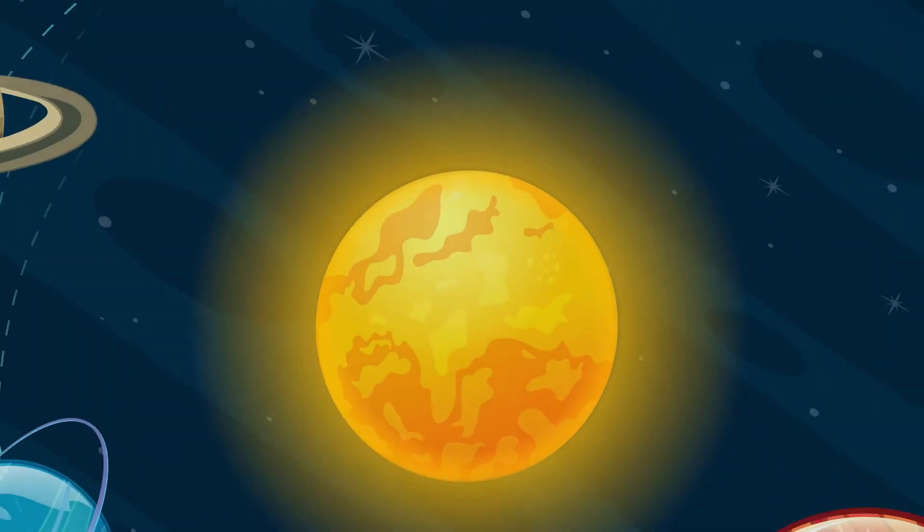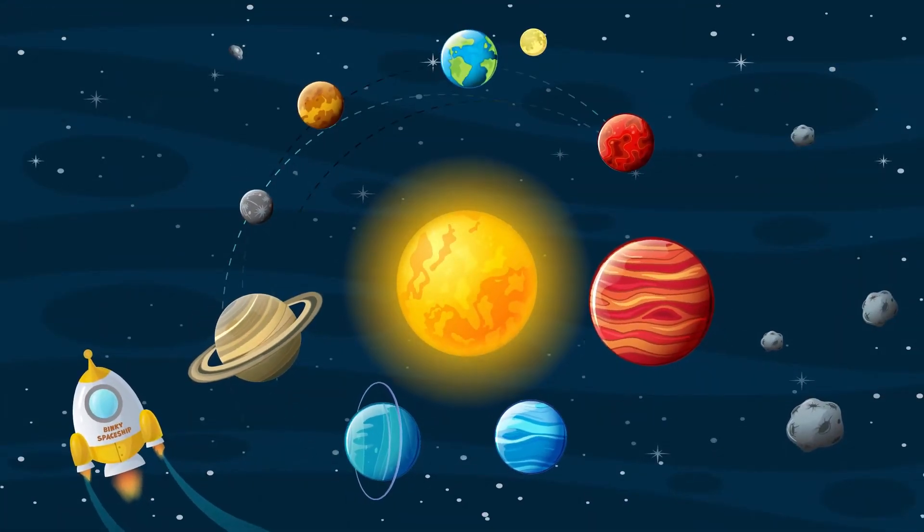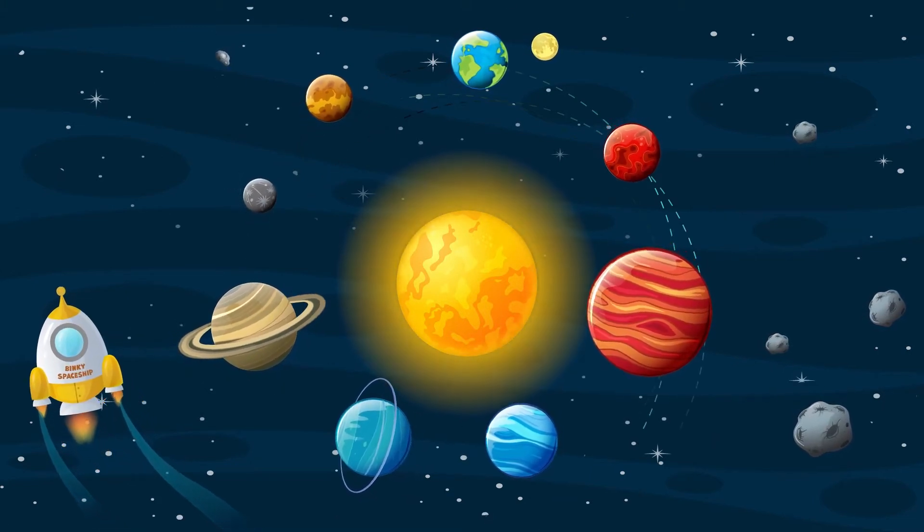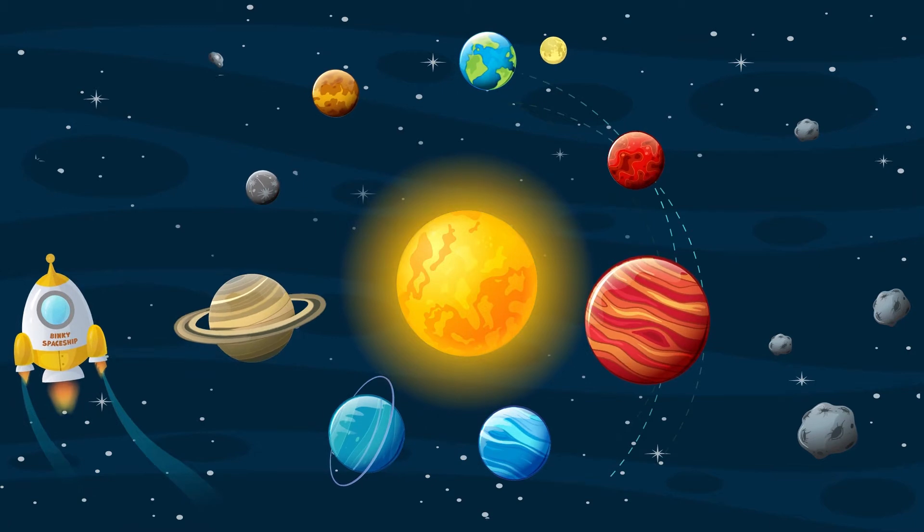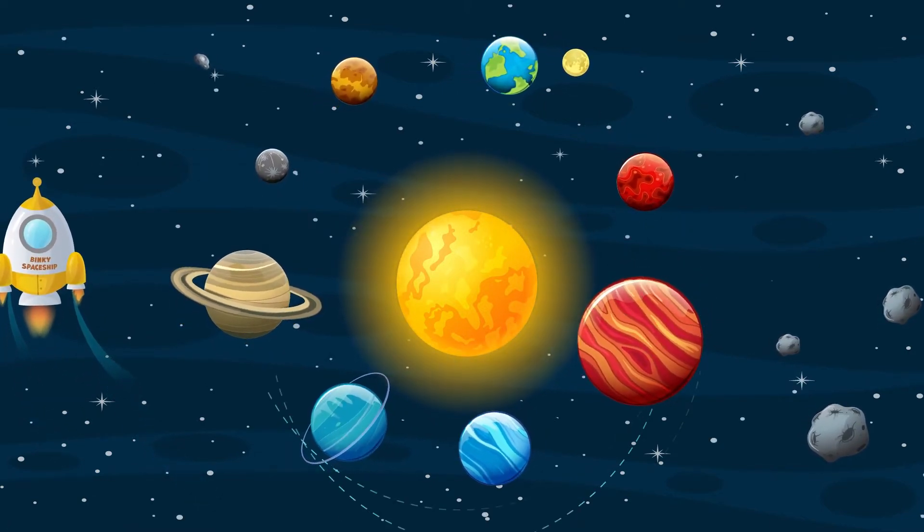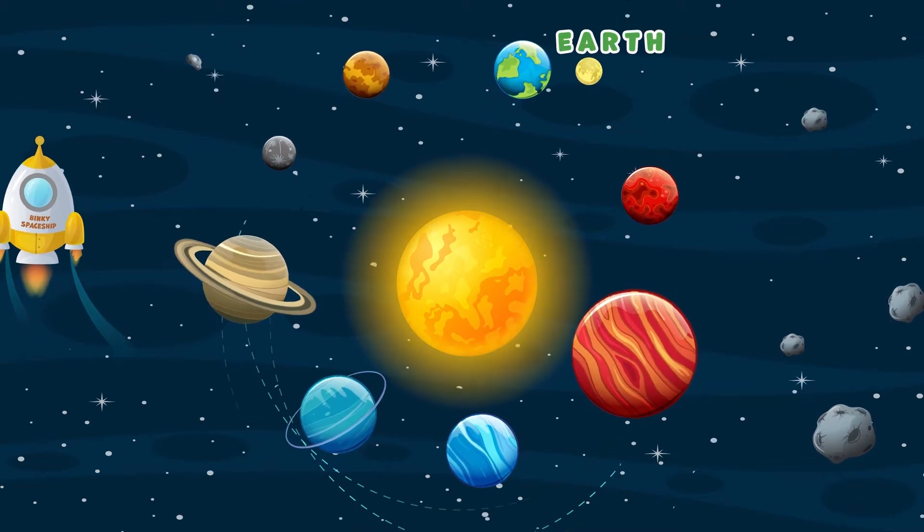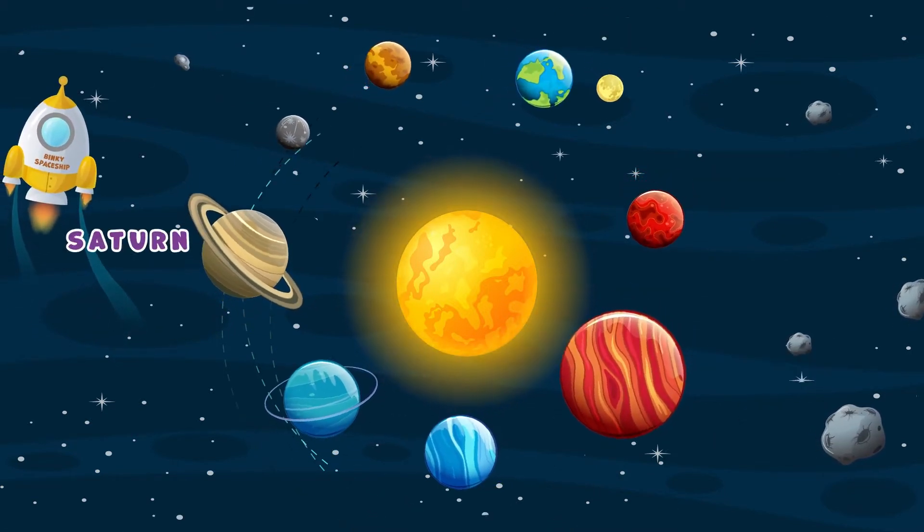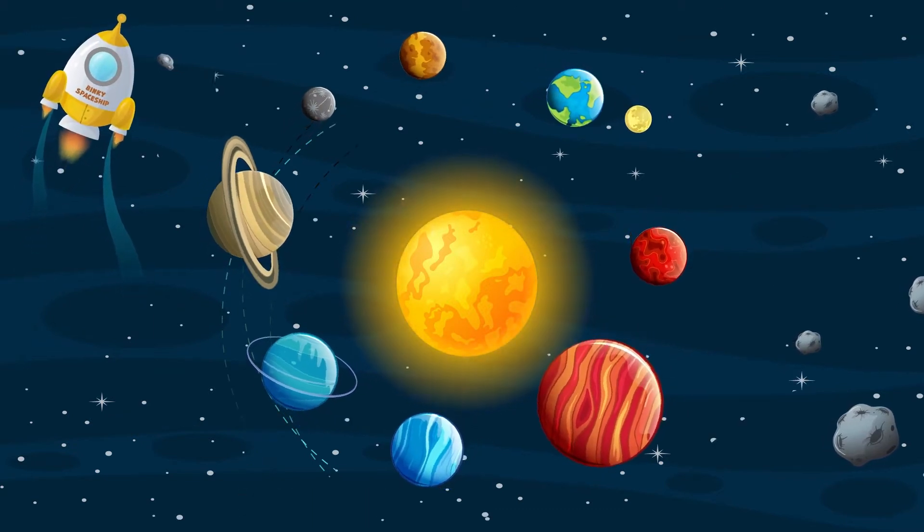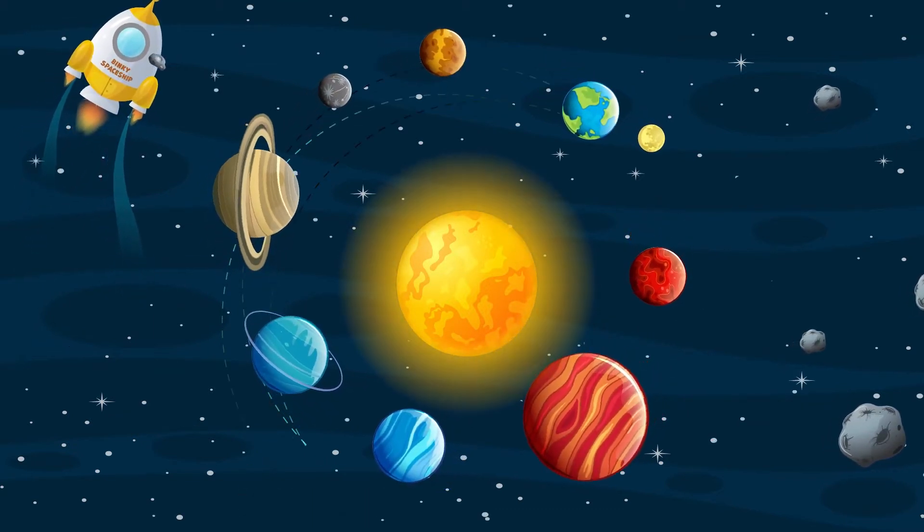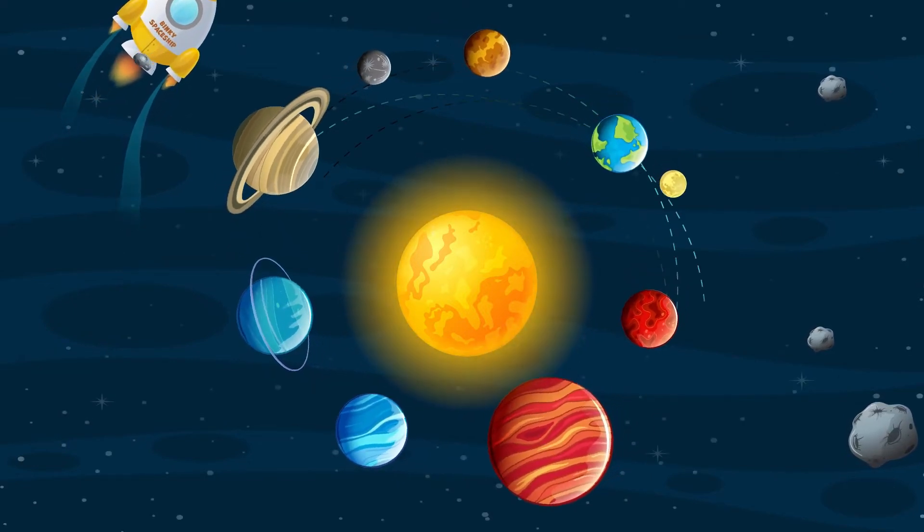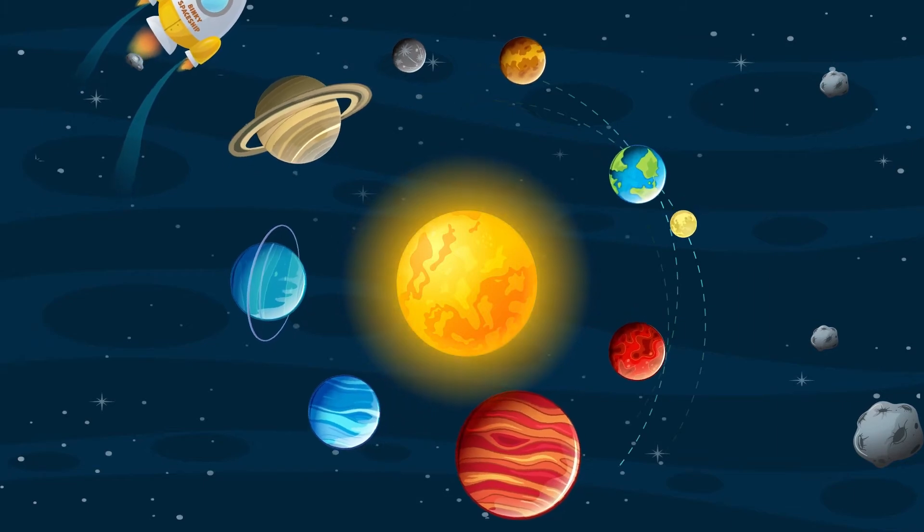Our solar system is located in the Orion arm of the Milky Way galaxy. It has one star, the sun, eight big planets: Mercury, Venus, Earth, Mars, Jupiter, Saturn, Uranus, and Neptune, dwarf planets such as Pluto, dozens of moons, and millions of asteroids, comets, and meteoroids.